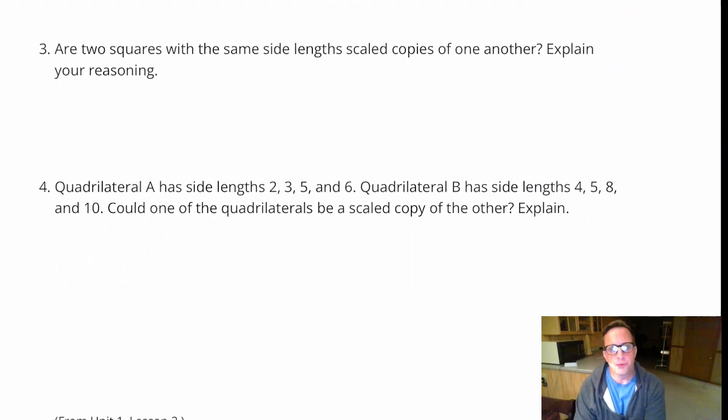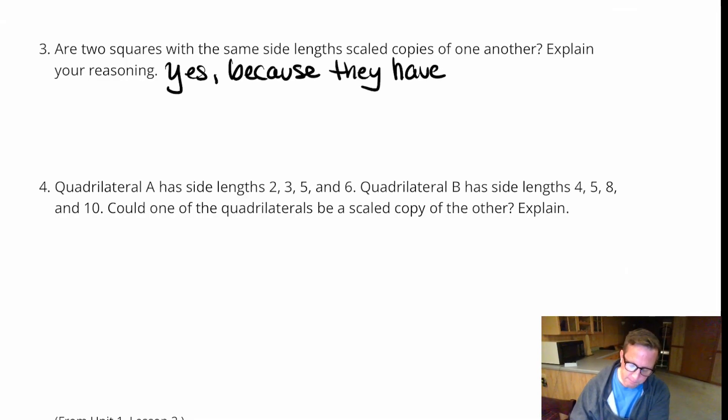Are 2 squares with the same side length scaled copies of one another? Explain your reasoning. Yes, because they have a scale factor of 1. 1 doesn't seem like much, but that's the identity rule. Multiplying by 1 definitely is a thing.